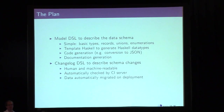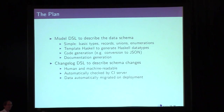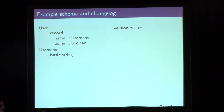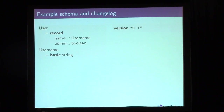The changelog lets us automatically check in continuous integration that as developers change the data model, they're also correctly updating the changelog. It also means we can automatically migrate data in the application so that at any time we can roll forward to the new version and the system adapts the stored data. Looking at a concrete example: on the left is the schema. We have users storing a record of a username and a boolean admin flag. Usernames are just a type-safe wrapper around strings so we don't mix them up with other strings.